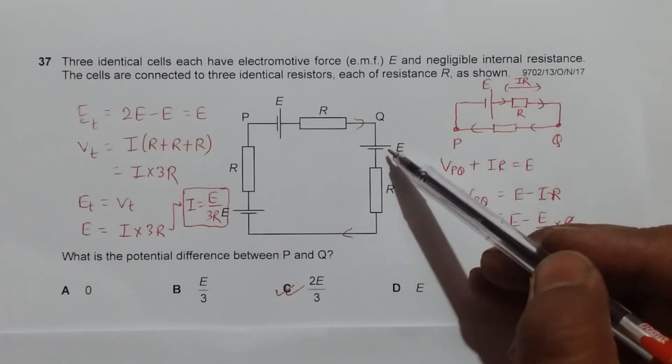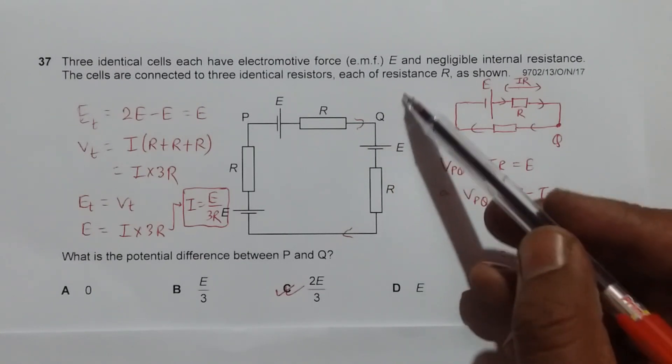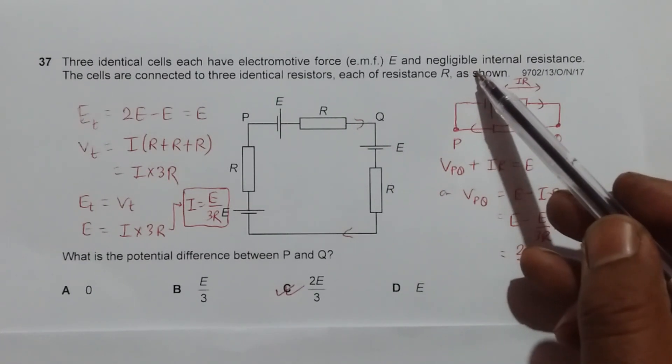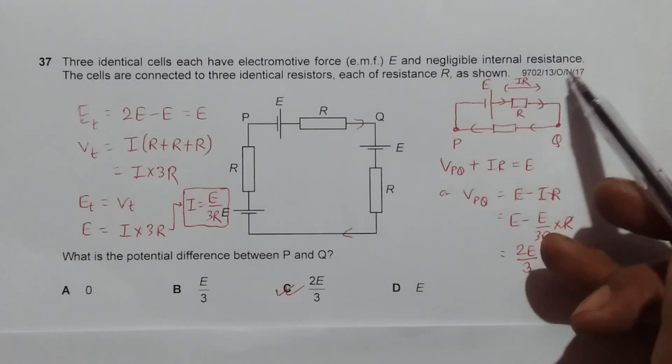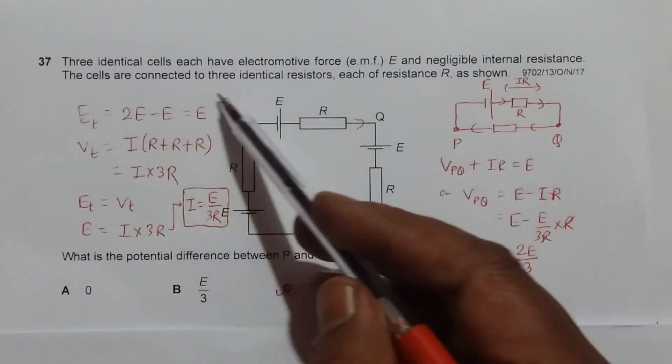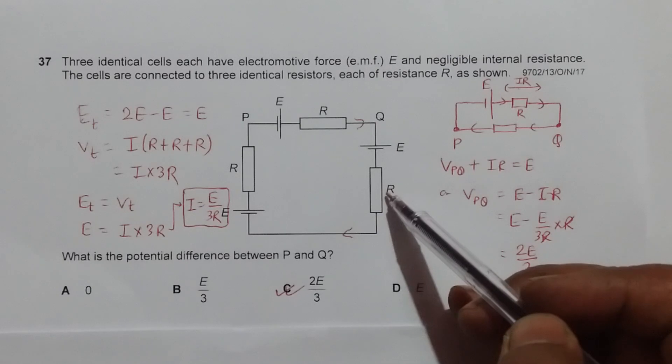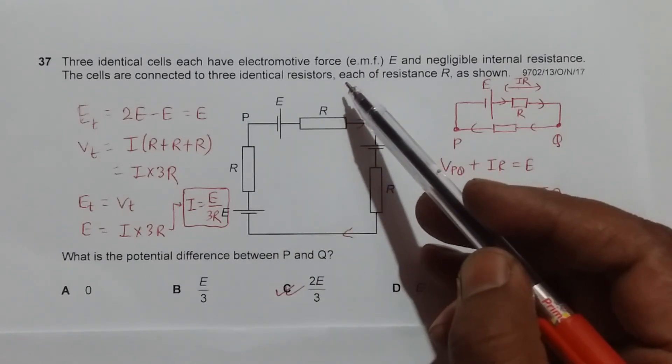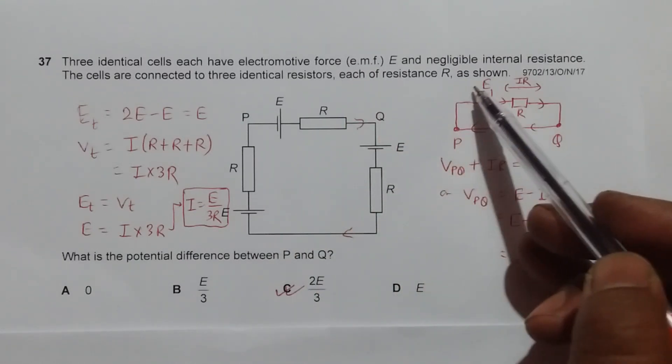Each of them have the electromagnetic force (emf) of E and negligible internal resistances. They are connected to three identical resistors - you can see here R, R, and R - each of the resistances are as shown.